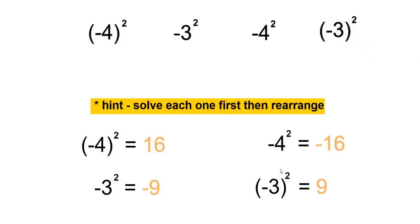So from least to greatest value, the least value will be negative 16, which is negative 4 to the power of 2. The next least is negative 9, which is negative 3 to the power of 2.